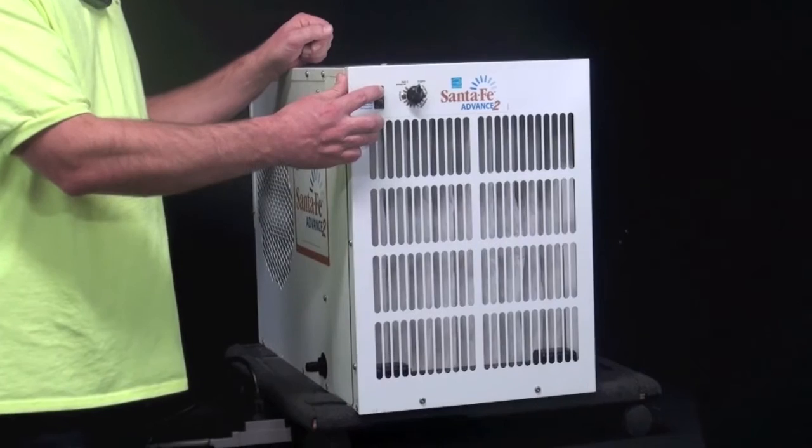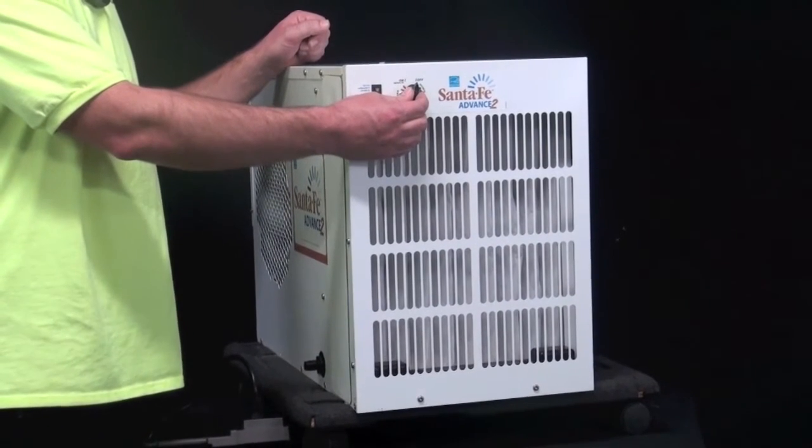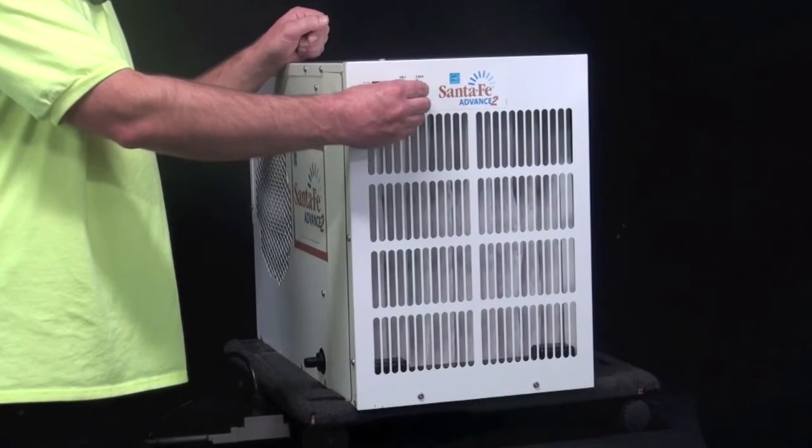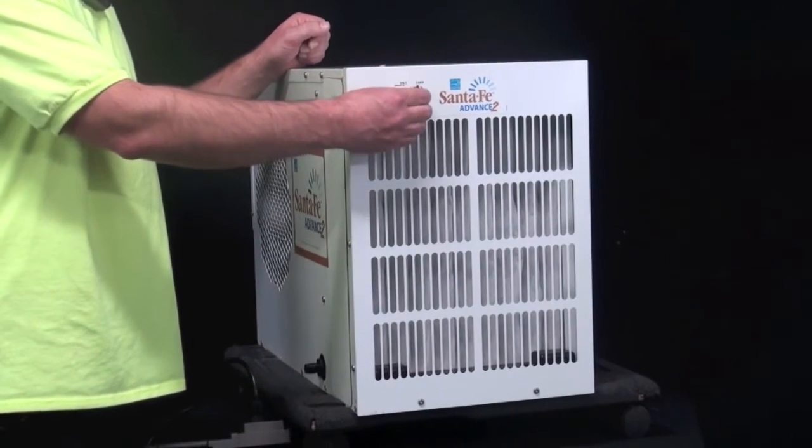Once the fan's running, you're going to want to turn the black control knob to turn the compressor on. Now you're going to turn the control to the right. If you have to turn it all the way to on, go ahead and do it.